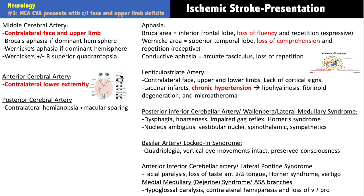Broca's aphasia results from infarction at the superior division of the MCA, affecting Broca's area in the inferior frontal lobe — expressive aphasia with broken, non-fluent speech. Wernicke's aphasia comes from the inferior division of the MCA, affecting the superior temporal lobe — receptive aphasia with loss of comprehension and word salad output. Repetition is intact in both Broca's and Wernicke's aphasia.